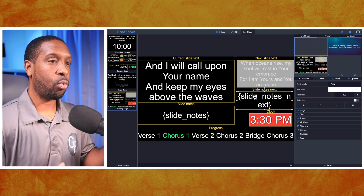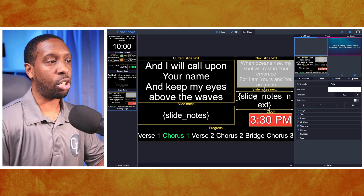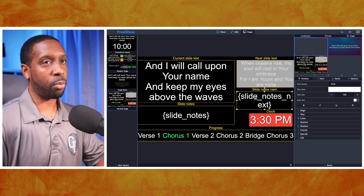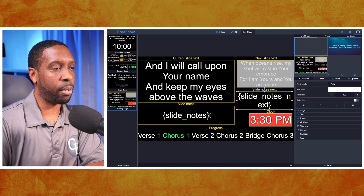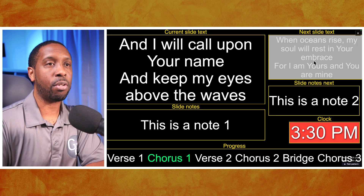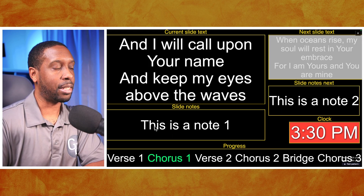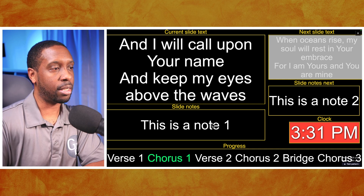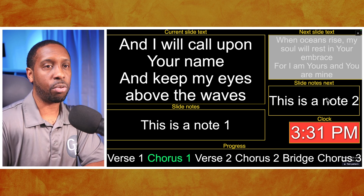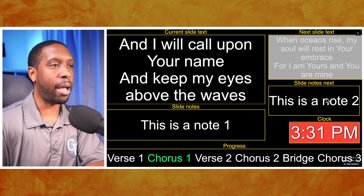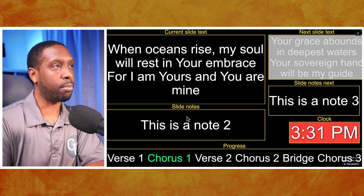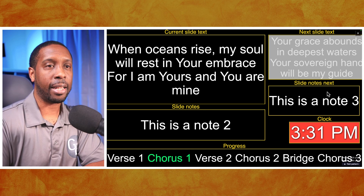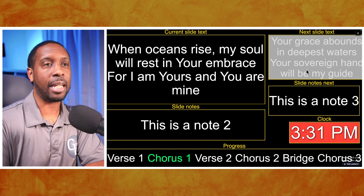You'll see the dynamic tag appear in the text box, but it doesn't show the actual content in edit mode — you just see the brackets. If you go over to the preview and select it, you'll see it has conformed and shows 'This is a note one' for the current slide and 'This is a note two' for the next slide. If you arrow through your slides, the notes update — note two becomes the current, and note three becomes the next slide note.